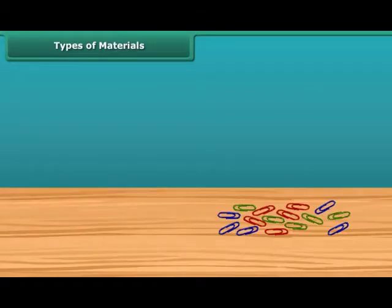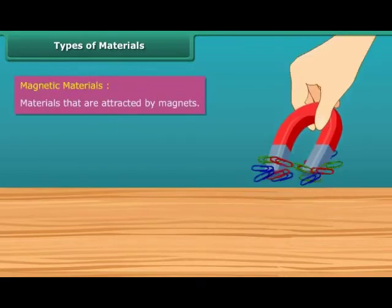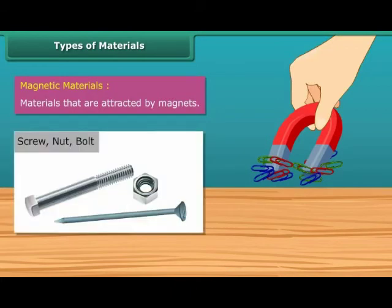Types of Materials. Now let us look at the types of materials. Materials that are attracted by magnets are called magnetic materials. For example, screws, nuts, and bolts are magnetic materials.